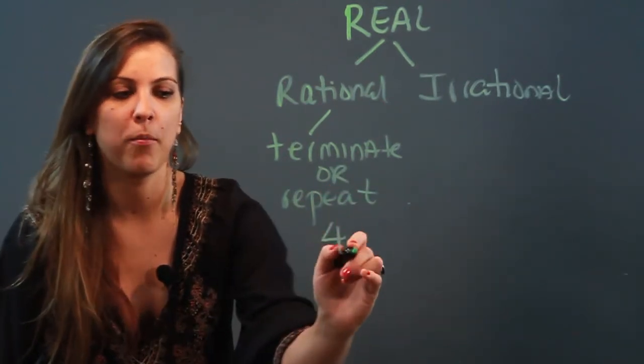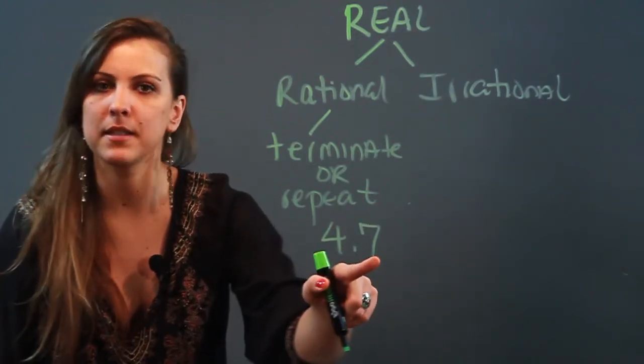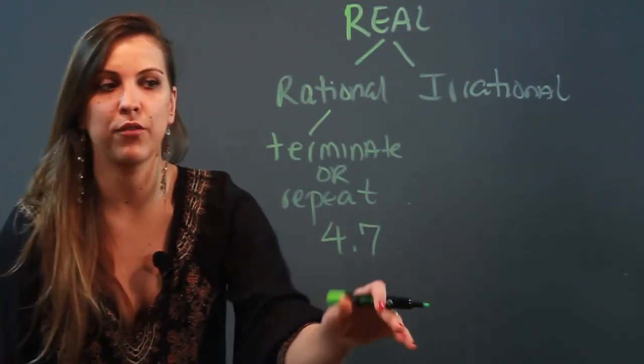So a decimal that would be an example of a rational number would be 4.7. Why is that rational? Because it stops. It stops at the number 7 and it doesn't go any further, so it terminates.